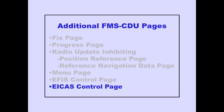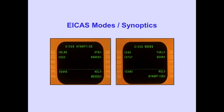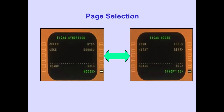Let's discuss the EFIS Control Pages. The EFIS Control Pages are selected on the Menu Page. The Select Prompt is only displayed when the EFIS Control Panel has failed. The EFIS Control Pages are used to select the desired EFIS Control Pages. The Lower Right Line Select Key selects between the ICAST Modes and Synoptics Pages.